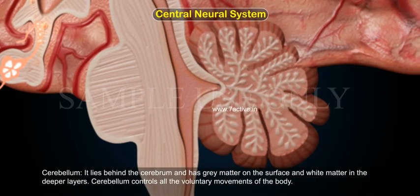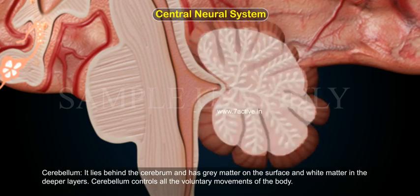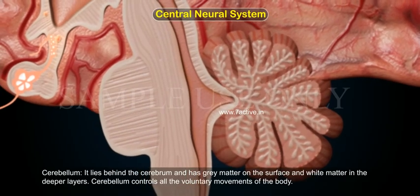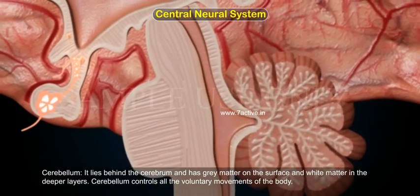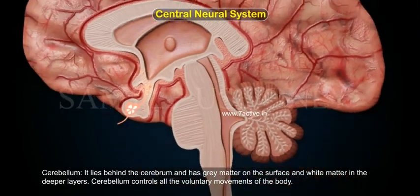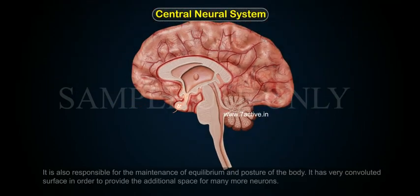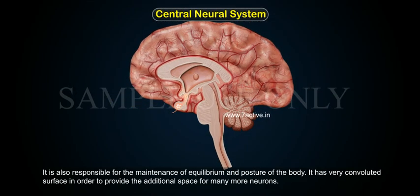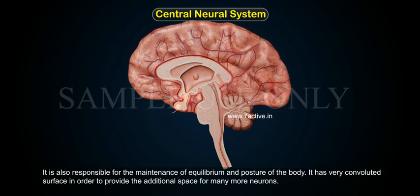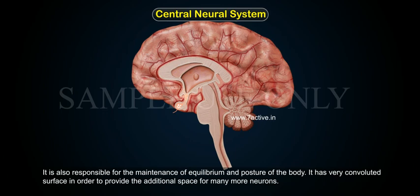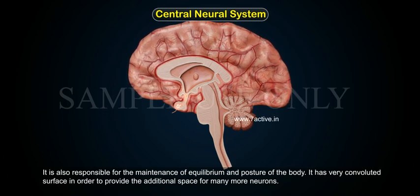Cerebellum lies behind the cerebrum and has grey matter on the surface and white matter in the deeper layers. Cerebellum controls all the voluntary movements of the body. It is also responsible for the maintenance of equilibrium and posture of the body. It has a very convoluted surface in order to provide additional space for many more neurons.